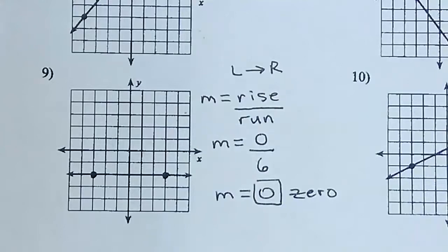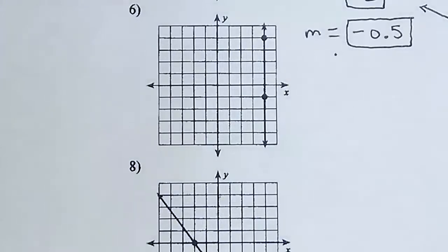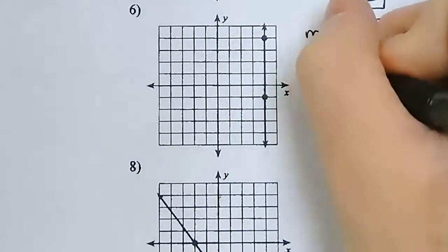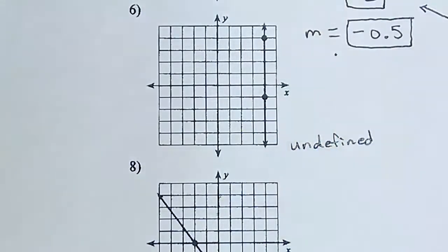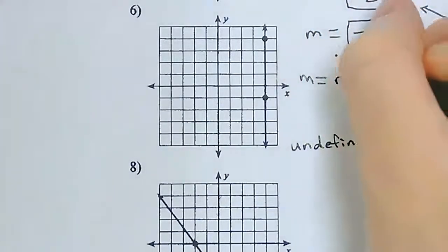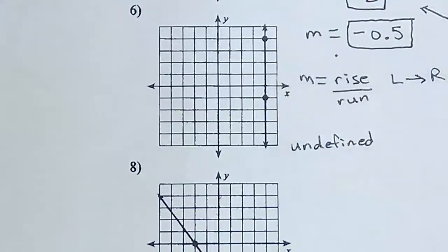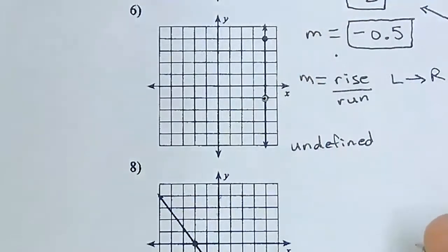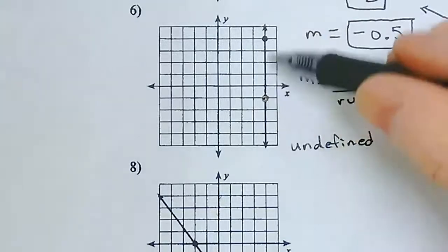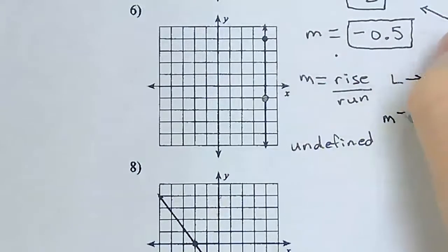The last one we're going to do is number 6. I'm going out of order because this has a special type of slope. This line is completely vertical, which means the slope is going to be undefined. But let's see how that works in the slope formula. I always have m equals rise over run, and I always want to start at the left and move right. Well, for this line I don't have a left point and a right point, so I just choose one point as my starting point — I'll choose the bottom point. How far up do I need to go to the top point? I go up 1, 2, 3, 4, 5, so my rise is a positive 5.